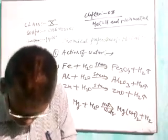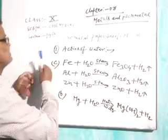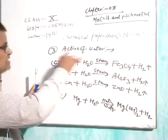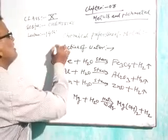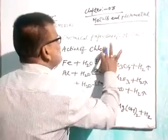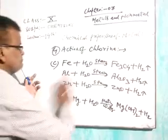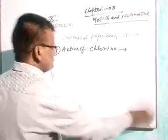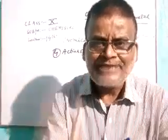Now the fourth chemical property of metal is action of chlorine. Metal reacts with chlorine to give the corresponding metal chloride. Sodium reacts with chlorine to give sodium chloride. Magnesium reacts with chlorine to give magnesium chloride. Potassium reacts with chlorine to give potassium chloride.